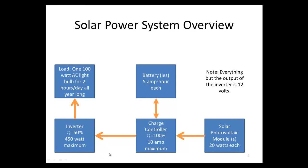Also in our system we have something called a charge controller. What a charge controller does is make sure that the battery is not too overloaded or too drained, because batteries don't like to be overcharged or undercharged. It's really the decision maker of the solar power system. We're going to use 100% efficiency for the charge controller — normally it's around 80% to 90%, but for simplicity we'll use 100%. The charge controller provides a maximum of 10 amps.